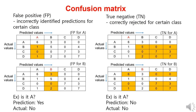False positive refers to the case where we predict a specific class to be correct, but it turns out to be incorrect. For example, if we predict it as A, but the actual value is not A, it is considered a false positive. If we take the case of class B, when we predict it as B, but it is actually not B, it would be represented in yellow. Lastly, true negative represents the case where we predict a specific class to be negative, and it turns out to be negative in reality. For instance, if we predict it as not A, and the actual value is also not A, it is considered a true negative.